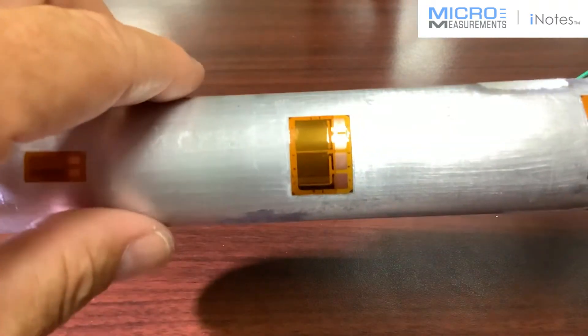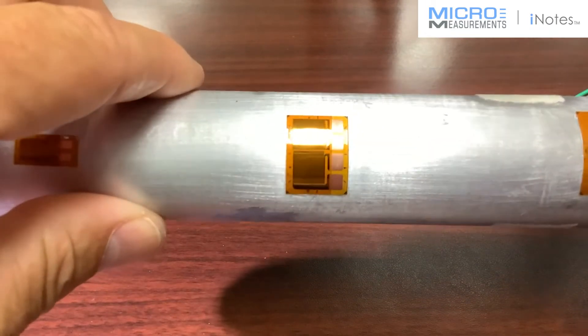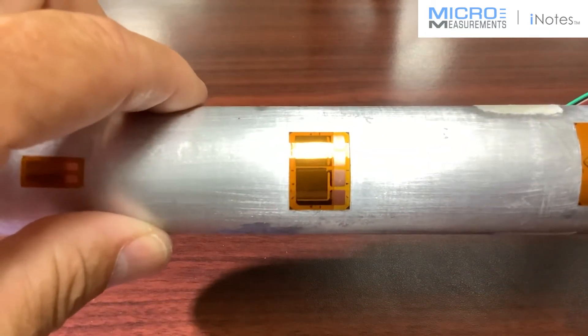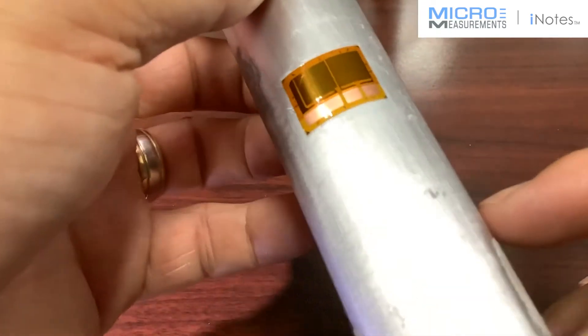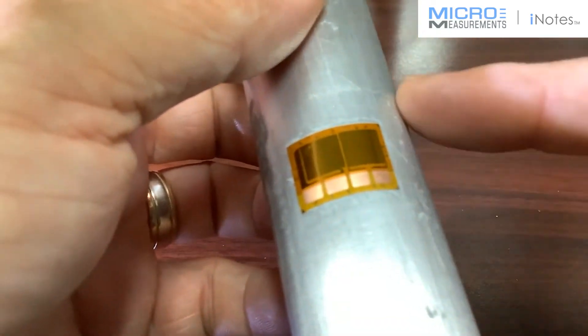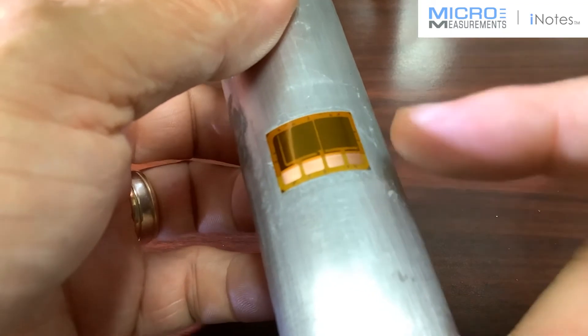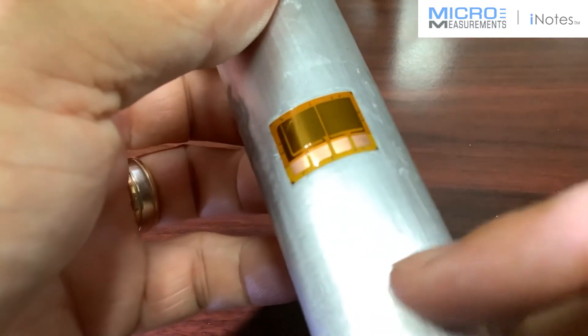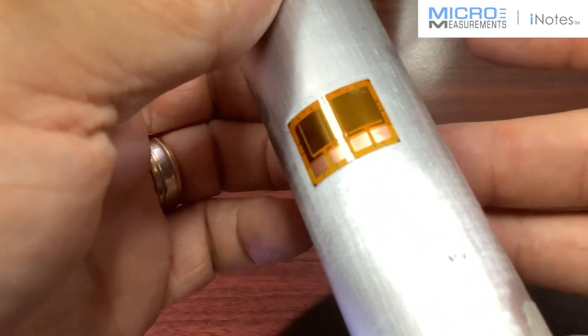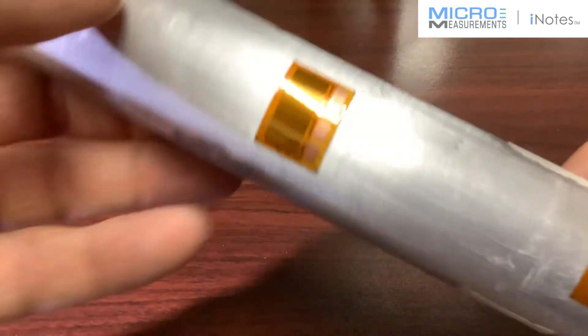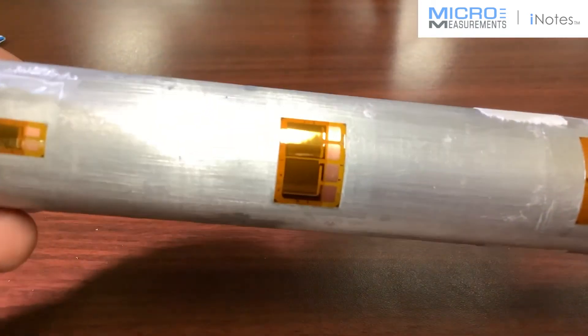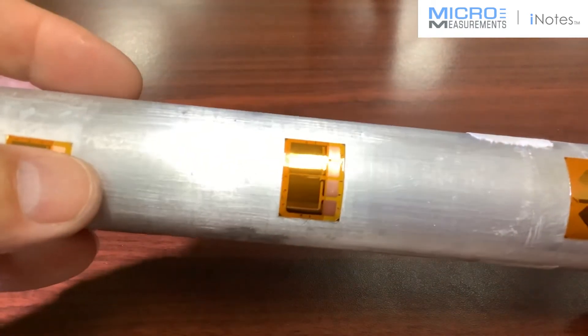You also might find that you're maybe going to measure an axial load through a tube like this, and if that's the case, you may put one of these on the front side and then put a second one on the back side and wire that into a full bridge, and then you can calibrate it for that axial load.